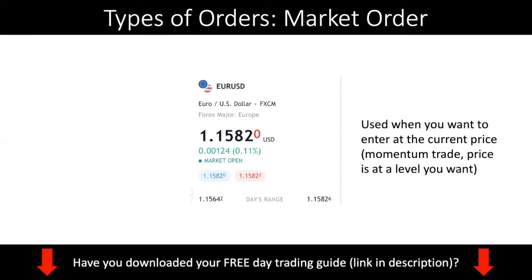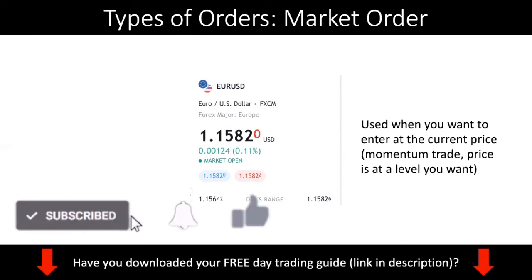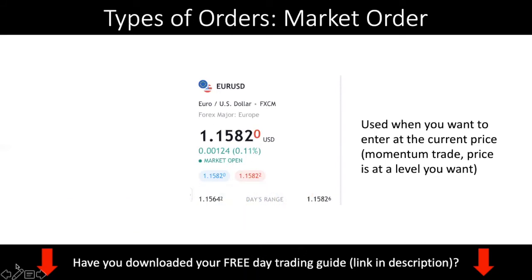When you do a market order, you are guaranteed to get the trade at that price, meaning your trade becomes open and you have a running position. So you want to use a market order when you're trying to catch a momentum trade or price is sitting at a level which you want to buy. For example, you predict that support is at 1.1582 and you want to buy off that support — then you click the market order. That's how you execute a market order.